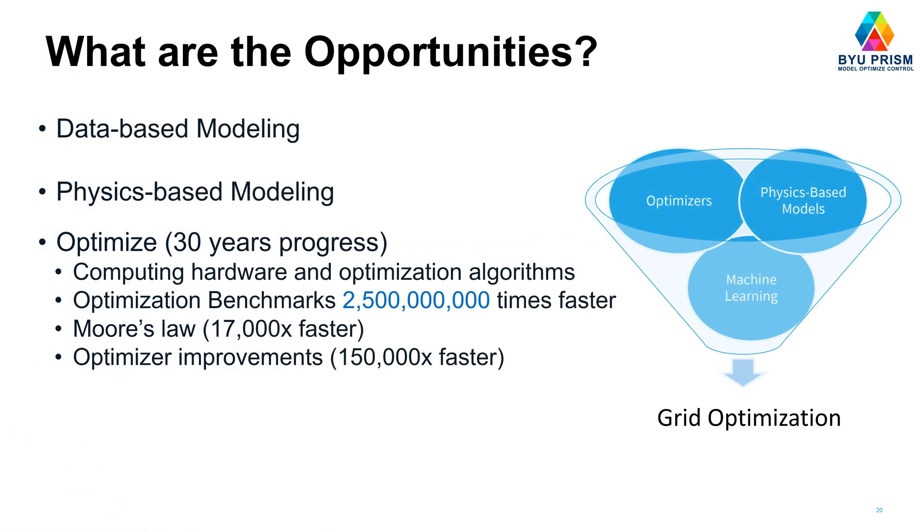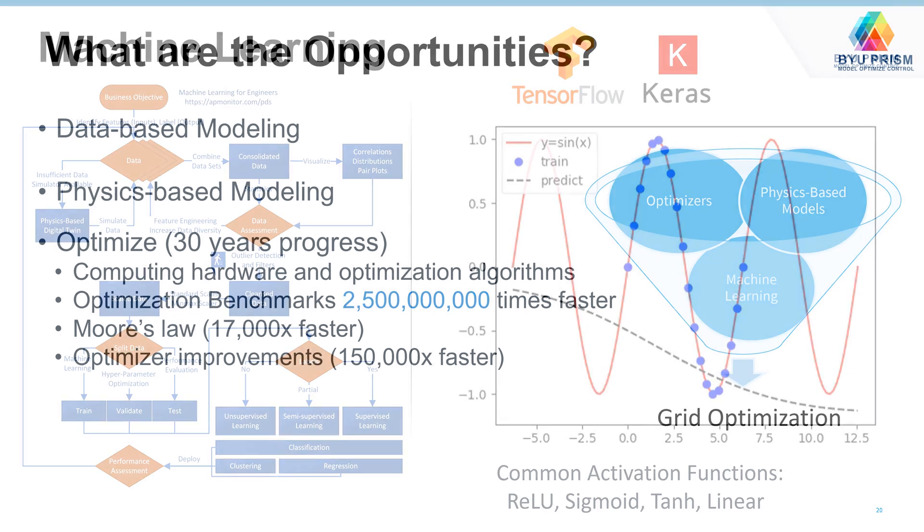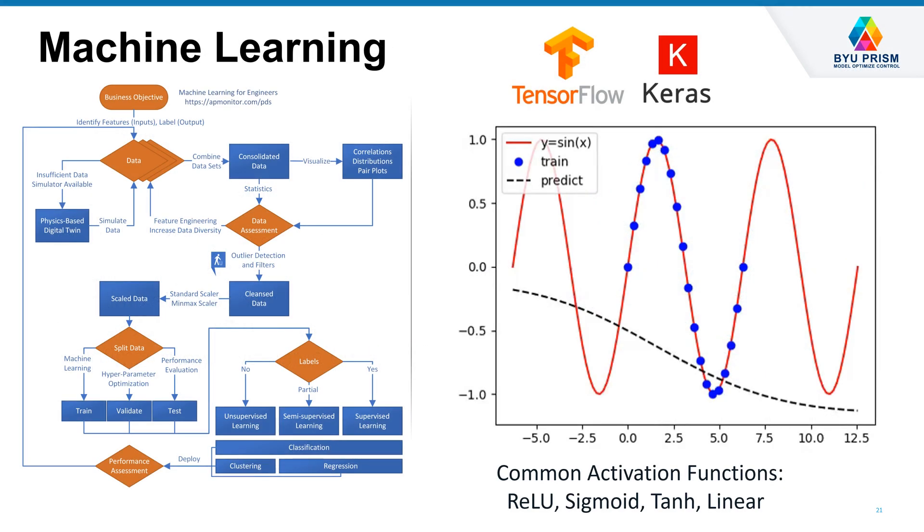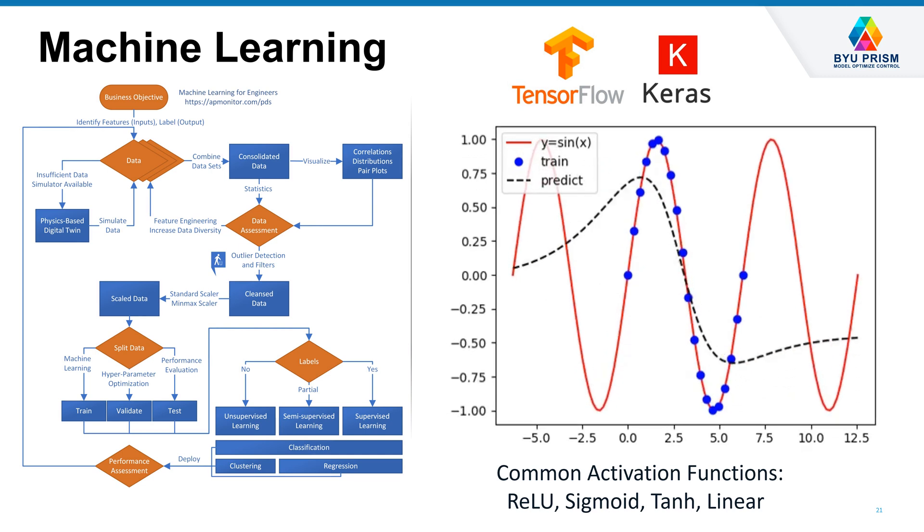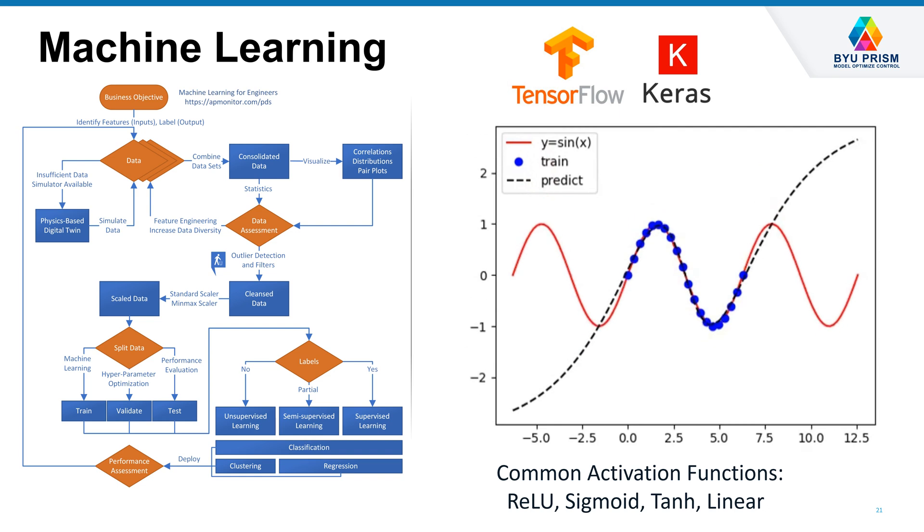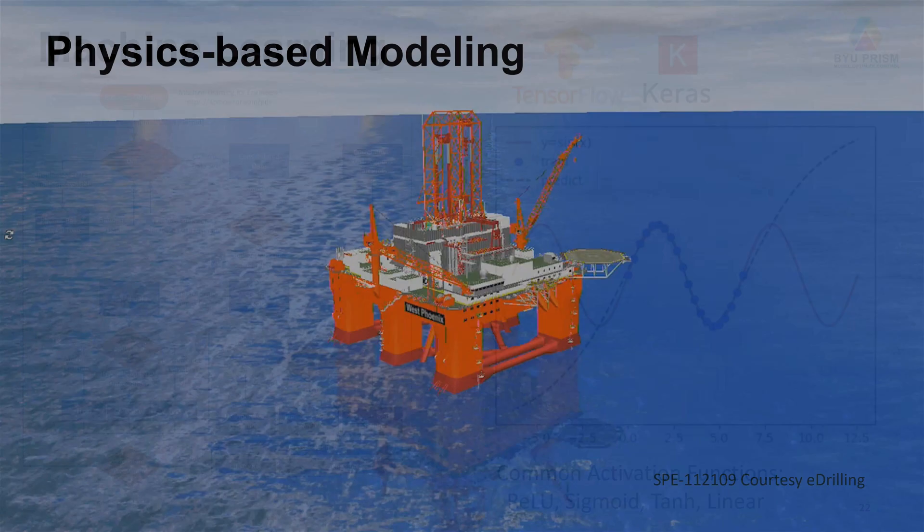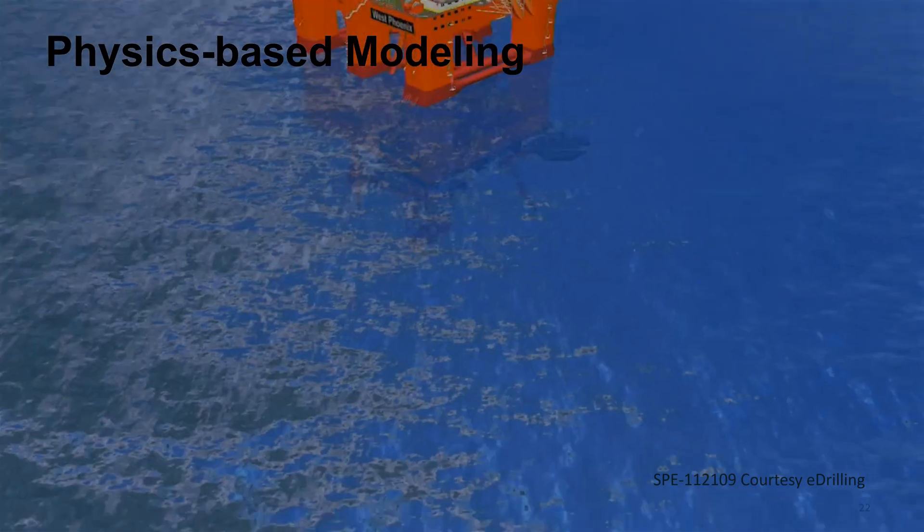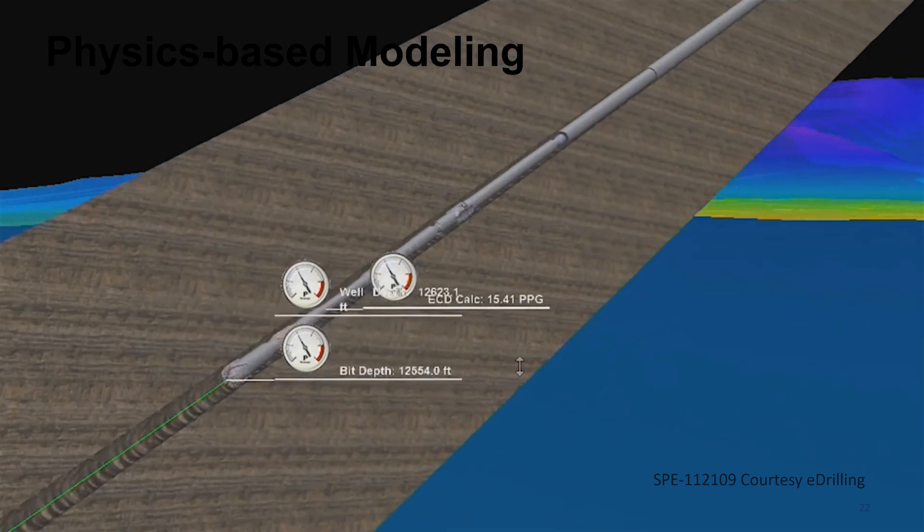So let's talk about some challenges and opportunities. The opportunities with this type of grid energy optimization are that we can use data-based modeling, not just physics-based models. And we have seen a big improvement in optimizers over the last 30 years with a 2.5 billion times faster due to Moore's law and optimizer improvements. We want to start using more machine learning. And so this package, Python Gecko, is integrating more machine learning concepts to be able to handle large data sets and combine those with physics-based models. So we have things like physics-based models that we can use and we want to be able to use those effectively with the data.